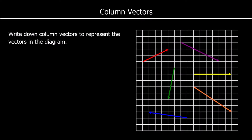We can use column vectors to describe a movement on a grid. So if we look at this red vector here, we can see it goes to the right 4, and then up 2. So as a column vector, we write 4, 2. So that means 4 to the right, and 2 up.